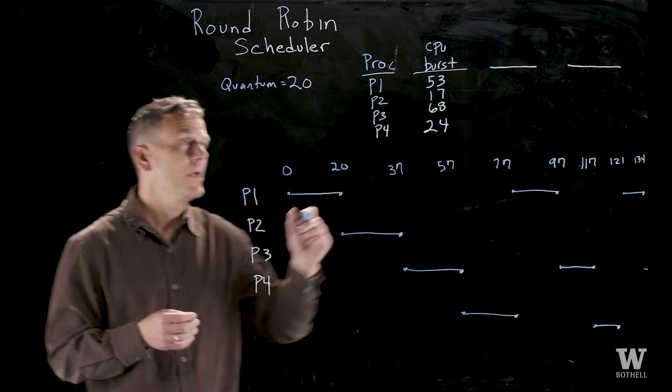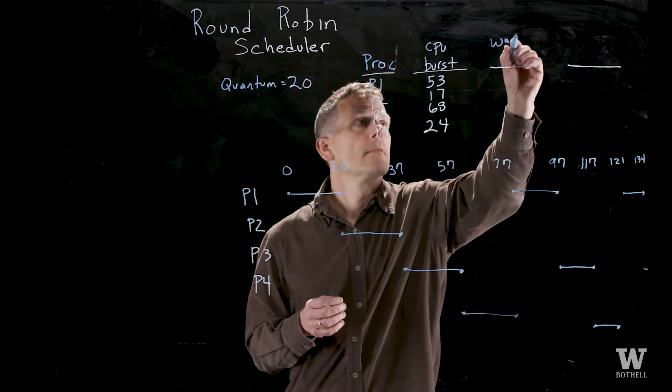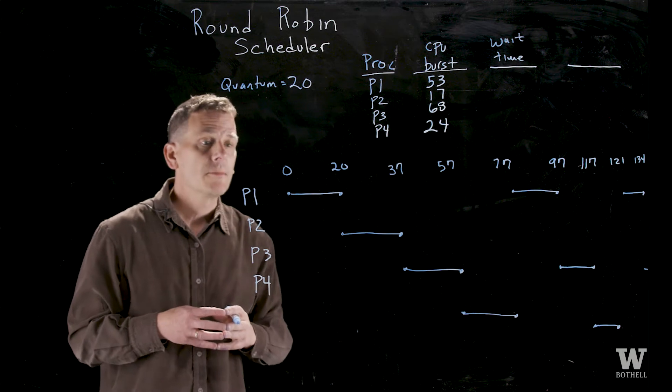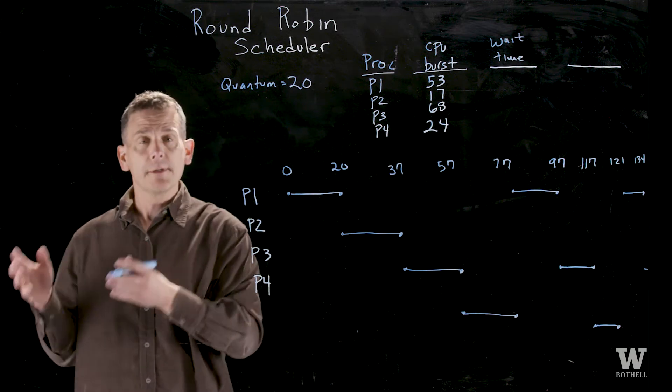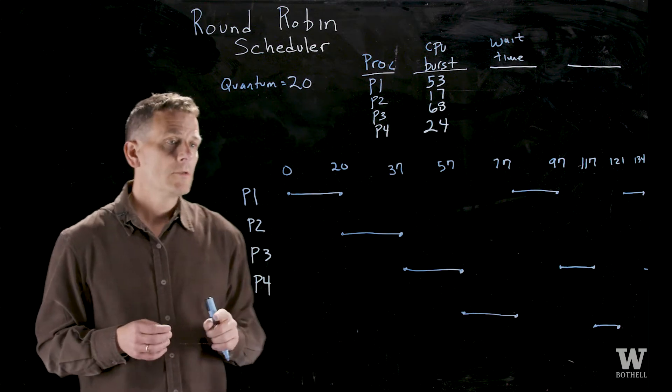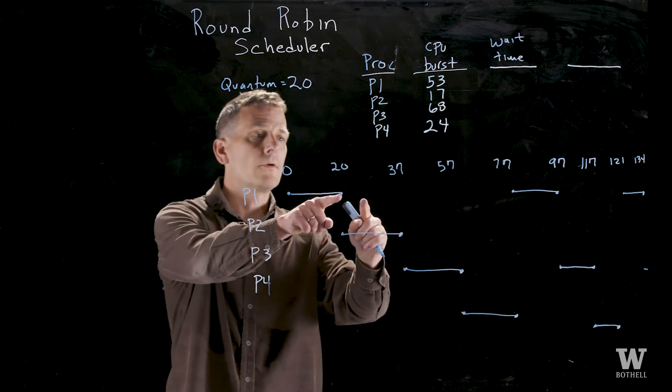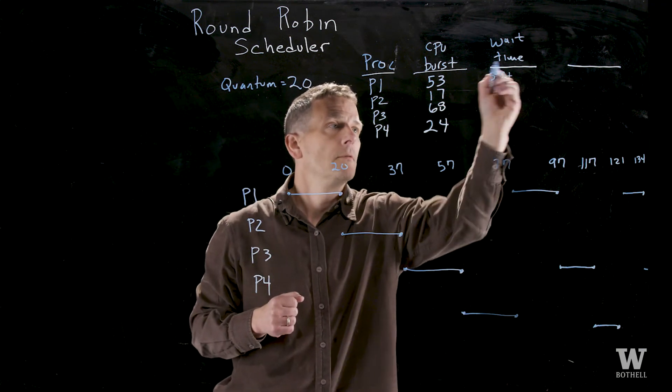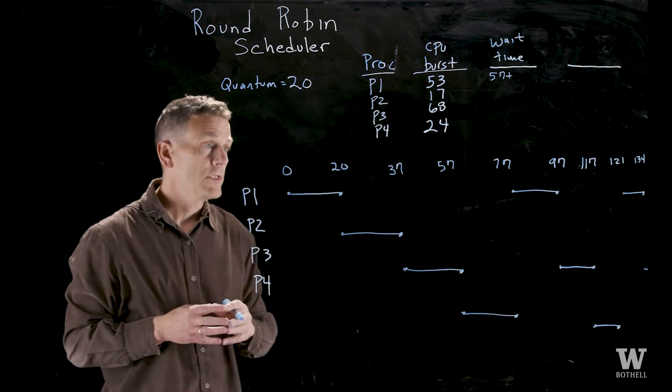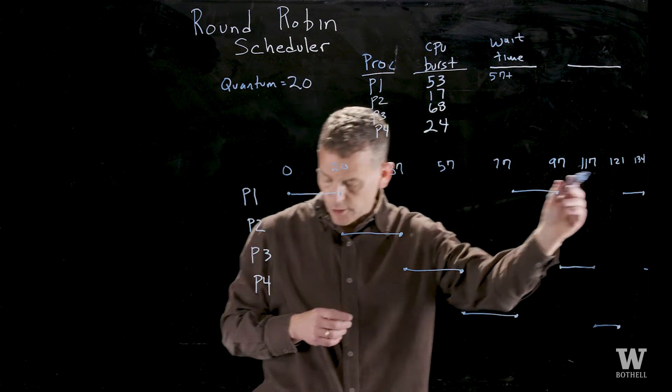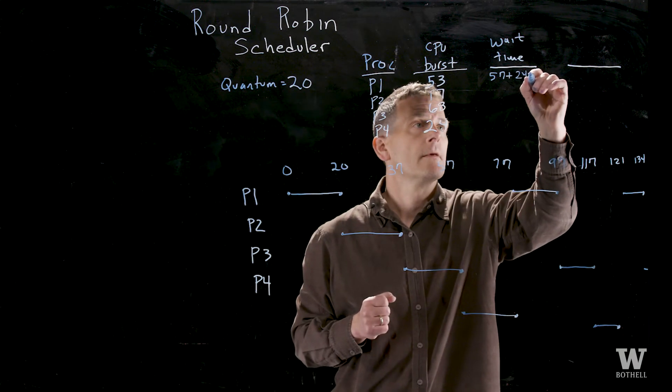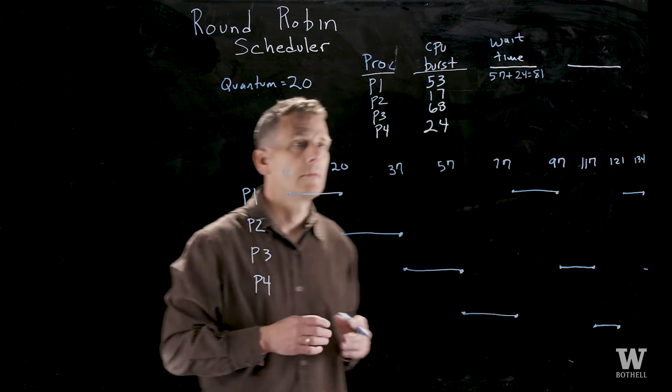Let's take a look at the wait time associated with this algorithm. Remember the wait time is the amount of time that the process could run but it's in the ready-to-run queue. So here process 1 waits from 20 to 77 which is 57 time units and then from 97 to 121 and that's 24 time units. So a total of 81 time units.